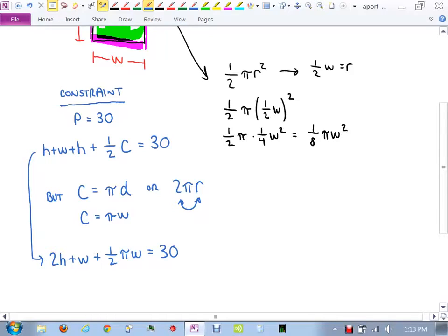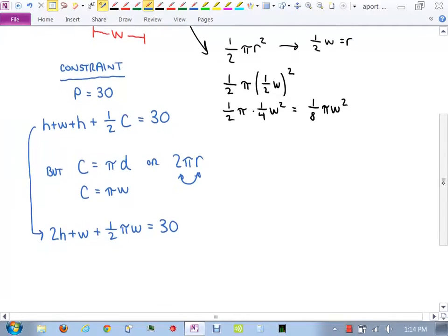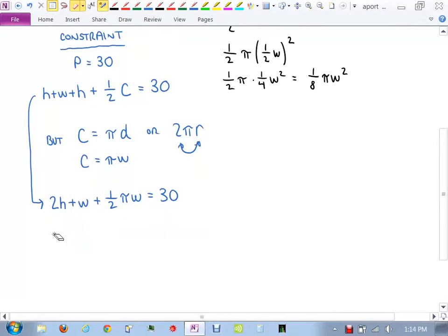Can we solve that equation for h or w? Can you get h by itself or w by itself on that equation? Which one would you prefer to solve for? I think h is easier, right? You take those w's to the other side and then divide by 2. So why don't we do that? Let's solve this for h. 2h equals 30 minus w minus one half pi w. Divide by 2. h is 15 minus one half w minus one fourth pi w.